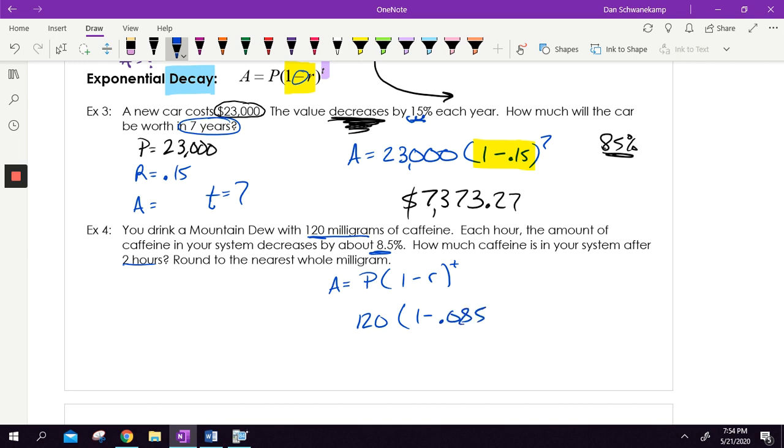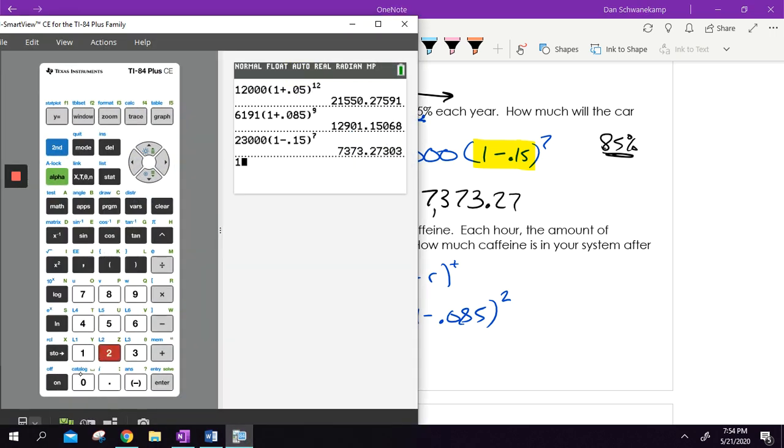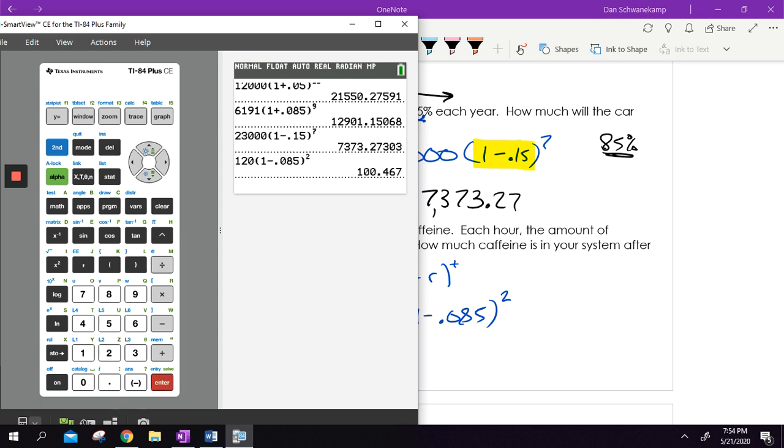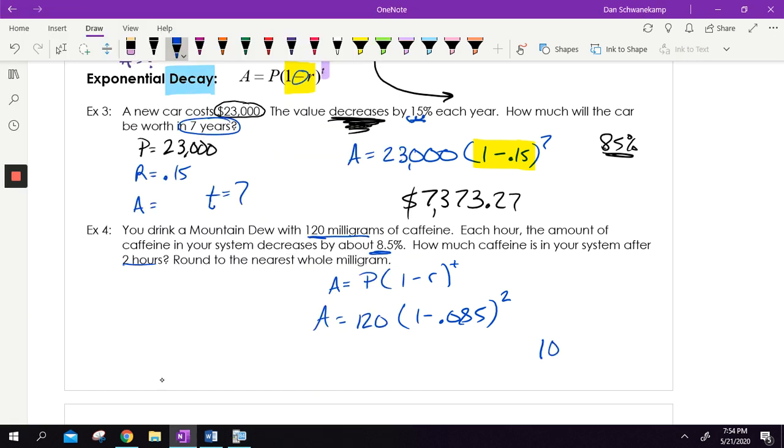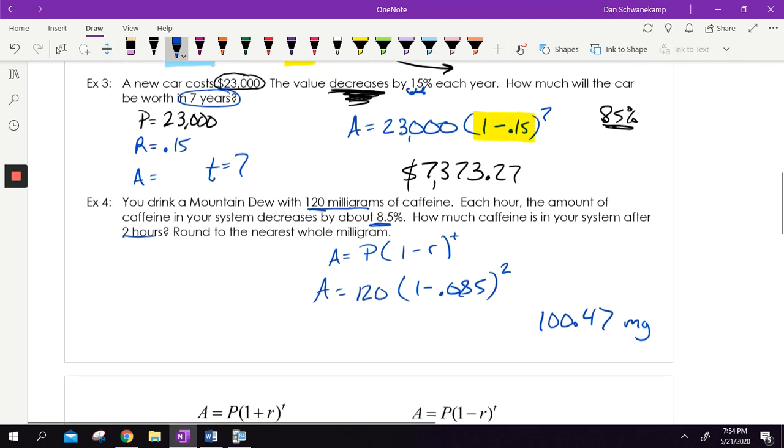So because of that, it is this equation. It's an exponential decay equation. This guy right here, 1 minus R to the T. We've got 120 is my P. My rate is 0.085 because I'm decreasing 8.5% each hour. And that is an hour. So that's why my T is going to be two. Let's type it in. 120 parentheses, 1 minus 0.085 to the second power. After two hours, instead of 120 milligrams, now I've only got 100.467. So 100.47 milligrams of caffeine left. So that Mountain Dew is wearing off pretty quickly.